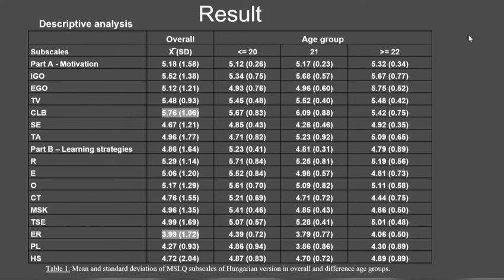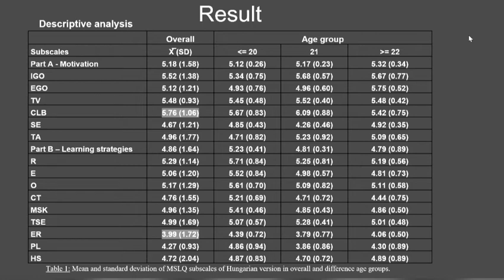The first table provides a descriptive analysis showing the overall mean and standard deviation. Based on the Likert scale from 1 to 7 — where 1 is 'not true at all' and 7 is 'completely true' — the overall MSLQ in Hungarian version for all 81 items has a mean of 5.02 and standard deviation of 1.6. The highest subscale is CLB — Control of Learning Beliefs — from part one, at 5.76 with a standard deviation of 1.06. The lowest subscale is ER — Effort Regulation — from part one, at 3.99 with a standard deviation of 1.72.